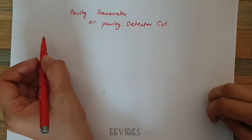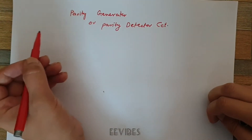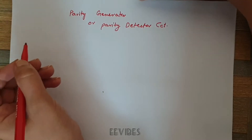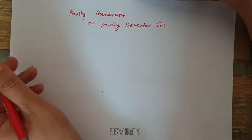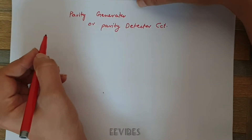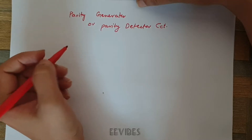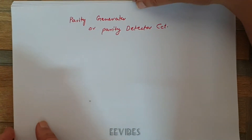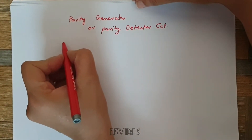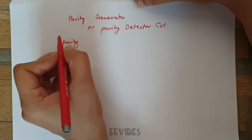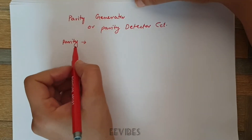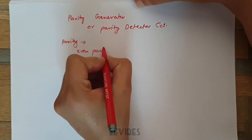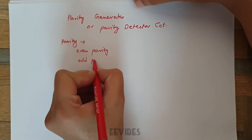The parity concept is used for detecting errors in communication systems or digital systems. The parity bit helps determine whether a certain type of error is present in the transmitted message, and on the reception side you can again apply the parity concept for detecting errors. There are two types of parity you can introduce while transmitting a message: even parity and odd parity.